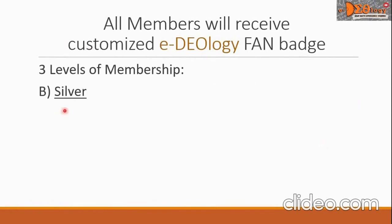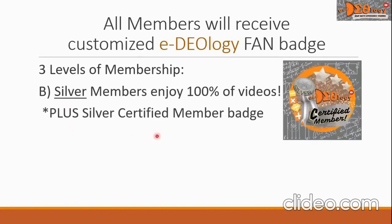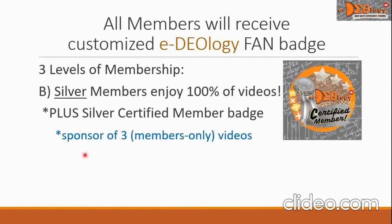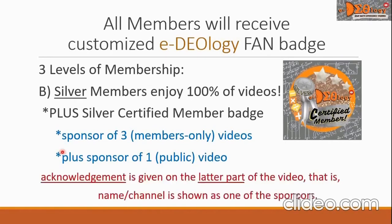The second level is Silver. Silver members enjoy 100% of videos, plus you will receive the Silver Certified Member Badge. As a Silver member, you are considered a sponsor of 3 members-only videos, plus a sponsor of one public video — merged videos of 3 to 7 math topics. As a sponsor, acknowledgement is given on the latter part of the video, where your name or channel is shown as one of the sponsors.